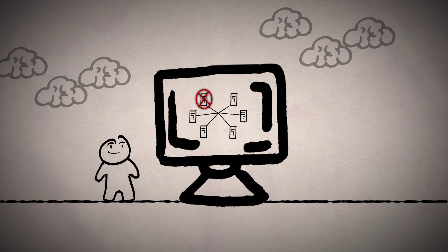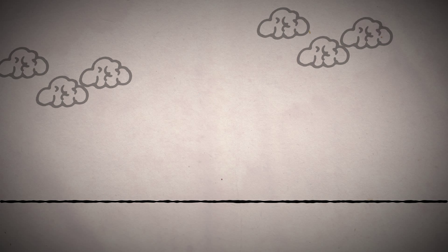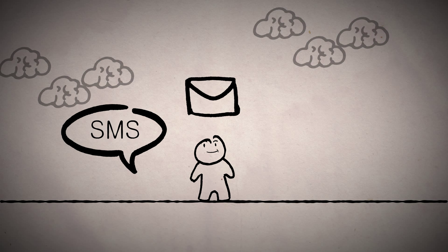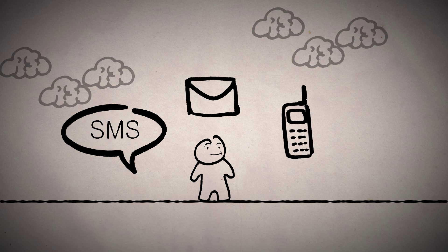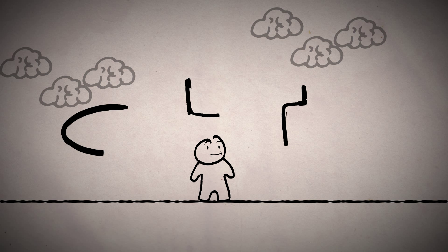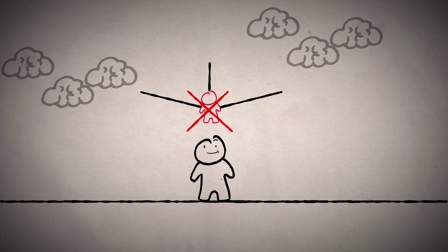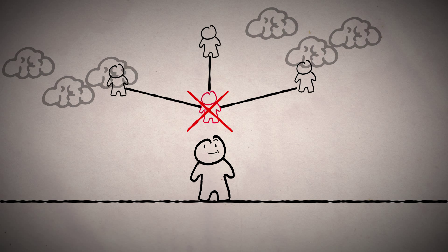Nagios can notify you in a variety of different ways, including SMS, email, or by phone. You can even set how it should be escalated in the event that the group responsible for resolving the alert isn't immediately available.